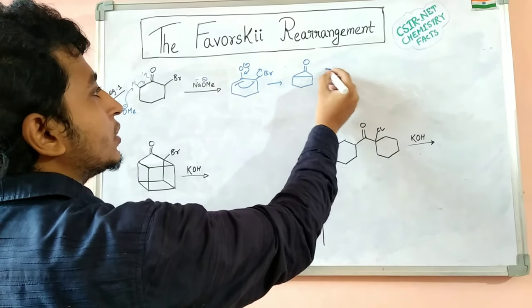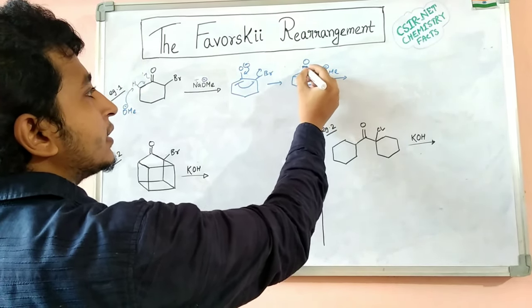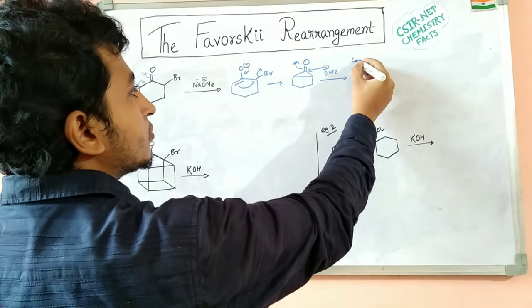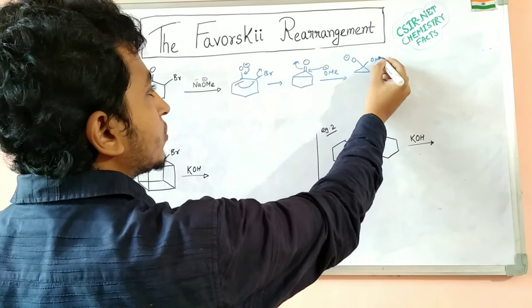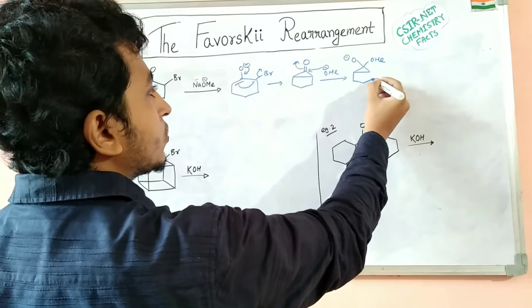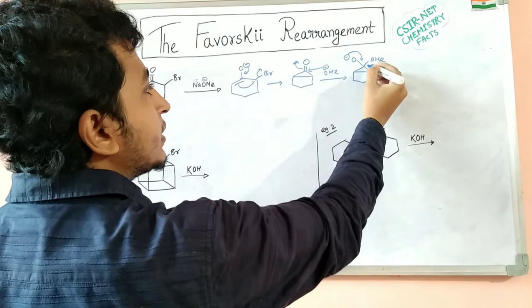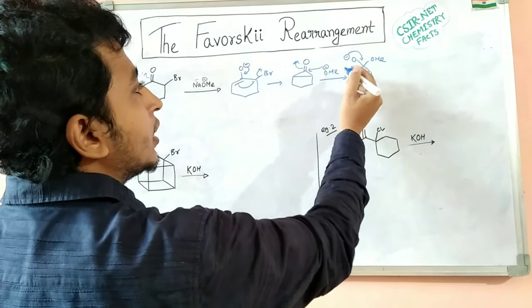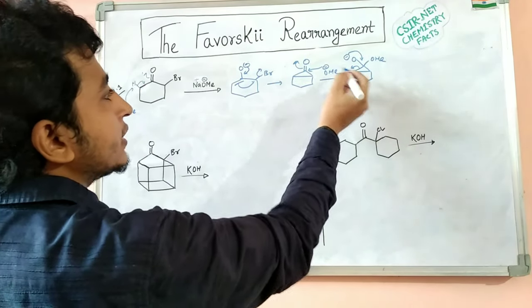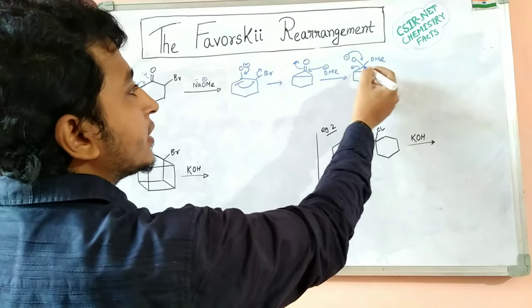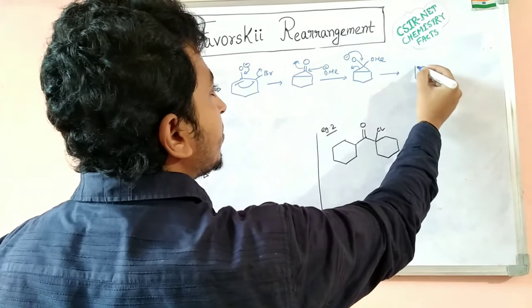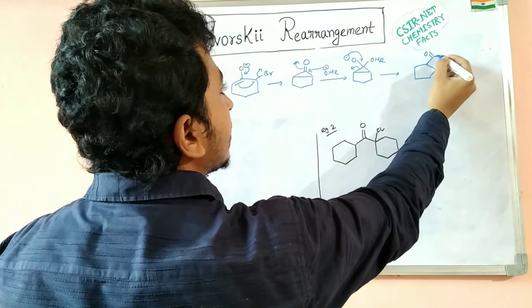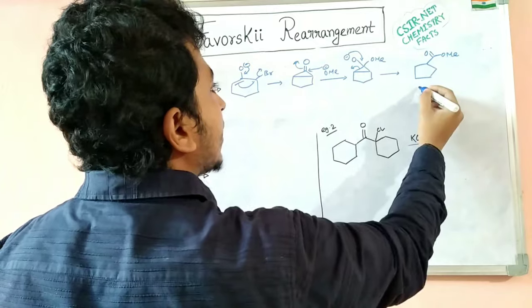The OMe⁻ further attacks this carbonyl carbon, the ring opens up, and this intermediate forms. The carbanion then comes back, this bond opens, and it takes a proton from the methanol present in solution. The OMe⁻ is regenerated. So the final product is a five-membered ring ester.